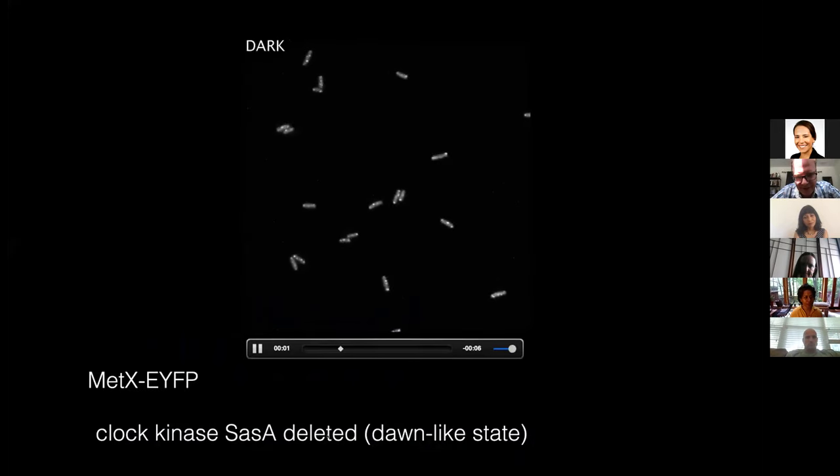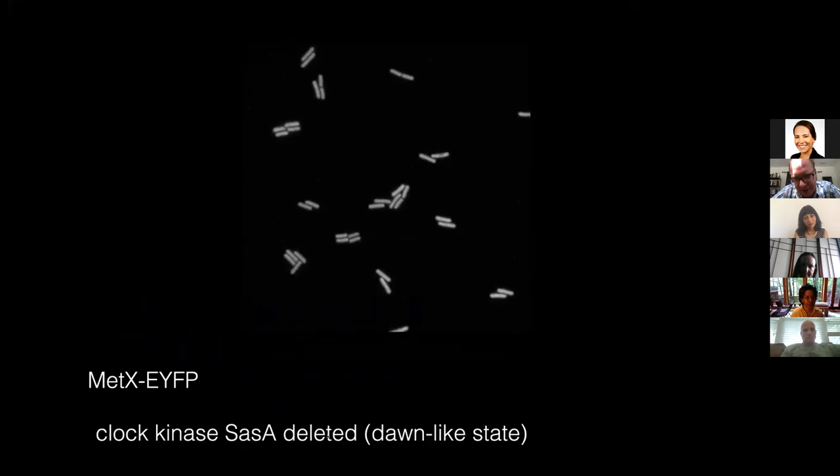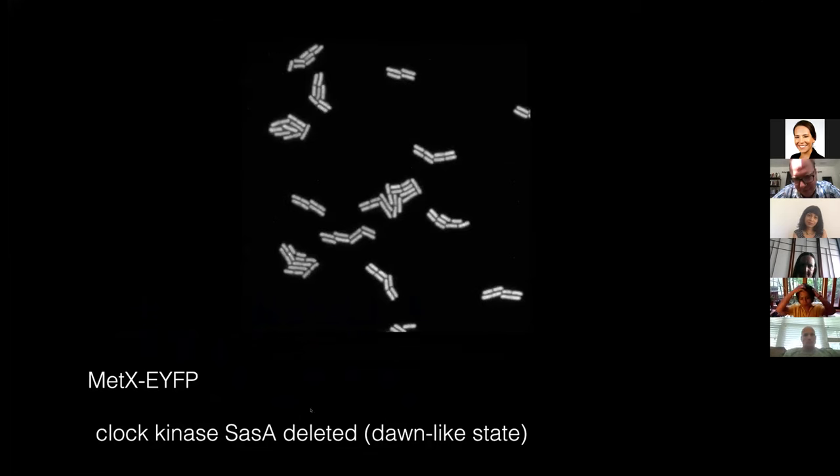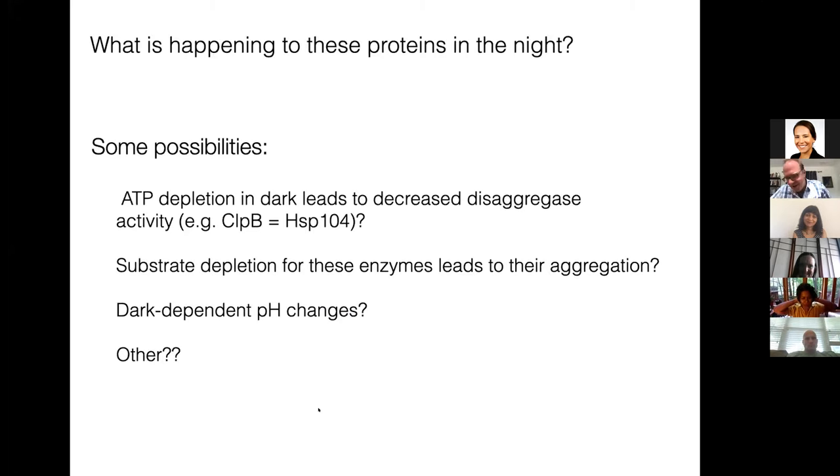Here's just a movie to show that. This shows very rapidly when SasA is deleted, you get spots. These MetX foci form like within an hour. That's rapid in our world. So what's happening to these proteins in the night? Some possibilities. You don't really know the answer. I'm throwing these out here to sort of provoke discussion or some insight from someone in the audience.